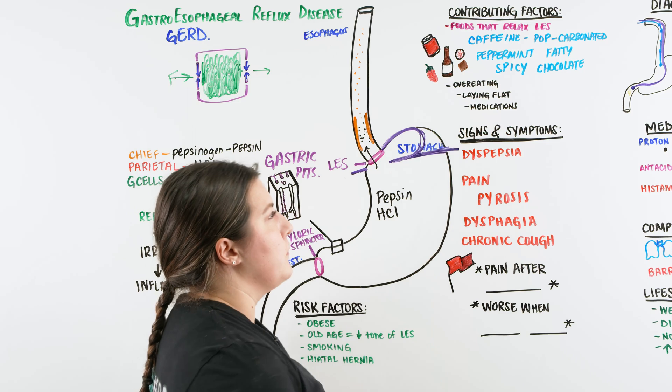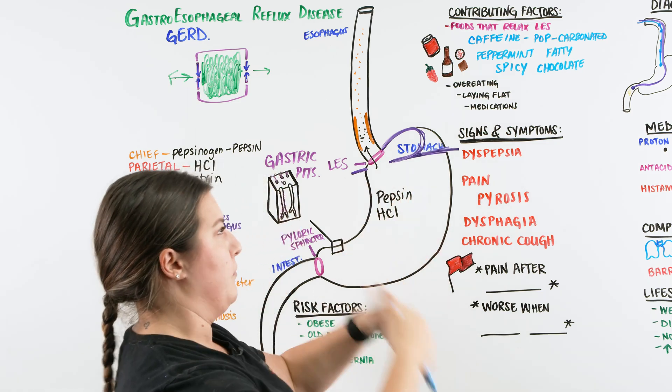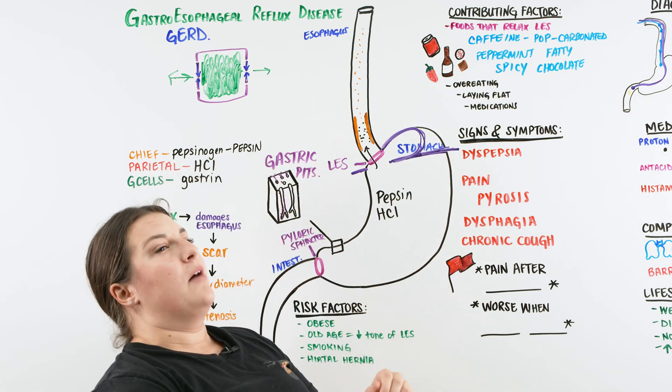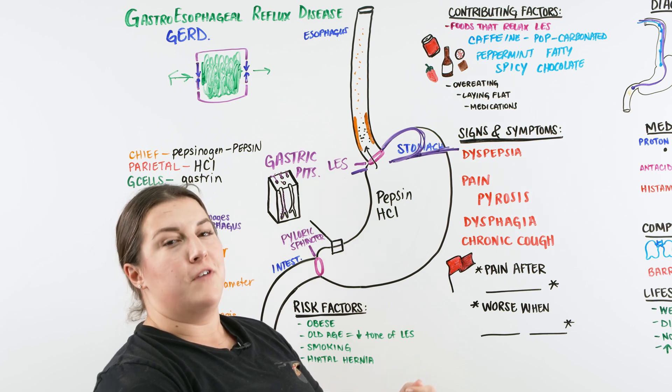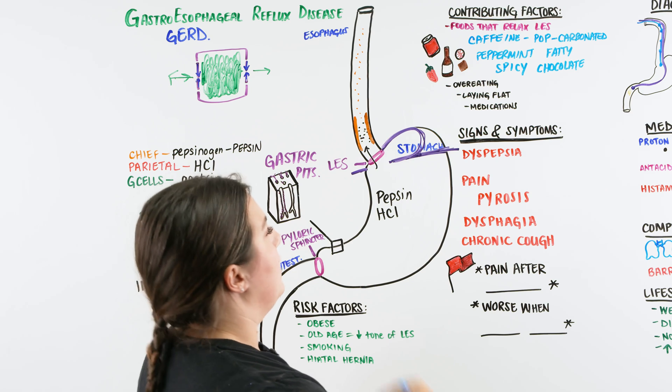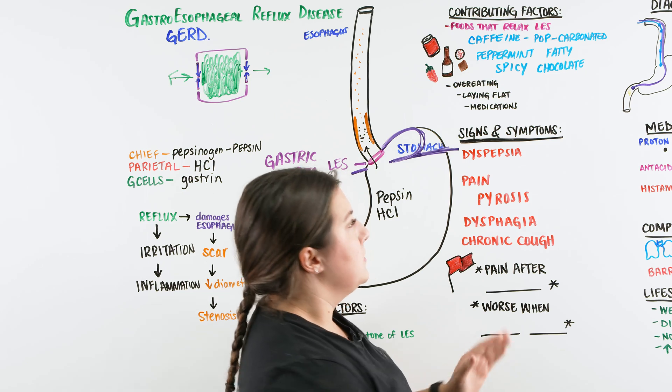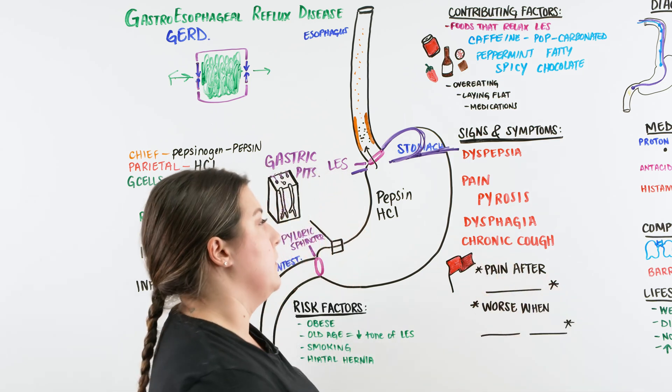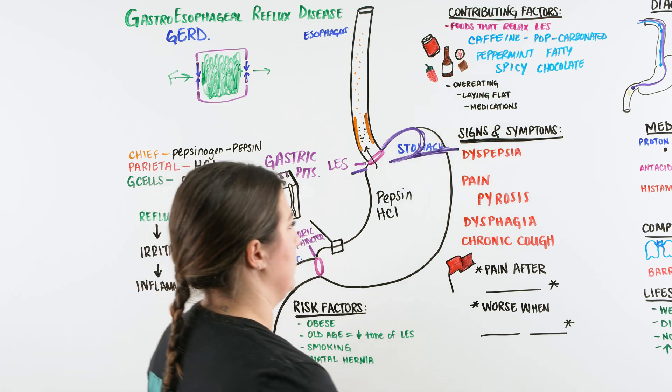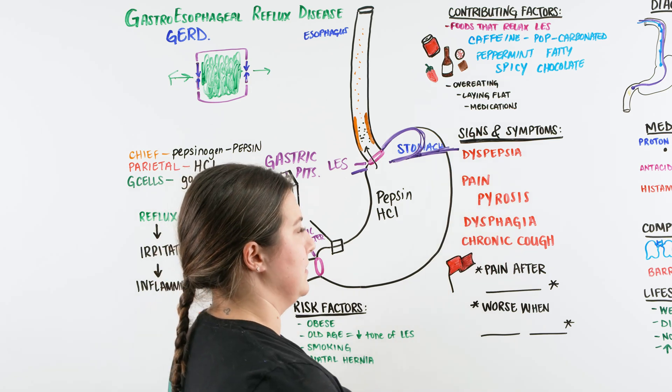All of these types of foods can cause a relaxation in the LES and is allowing for that reflux to occur. There's also, we touched on this before, overeating. When it's too packed full in the stomach, it's got nowhere else to go but back out from where it came. Eating really quickly and then lying flat, so then you're going to lay down, allowing for gravity to not work in your favor, and allowing that food to possibly create that irritation or that reflux. And then certain types of medications.